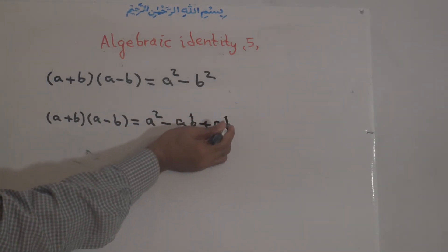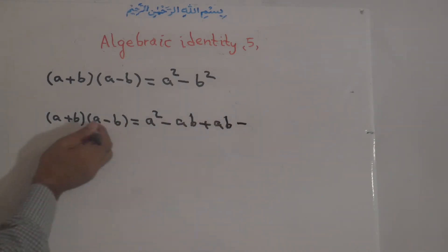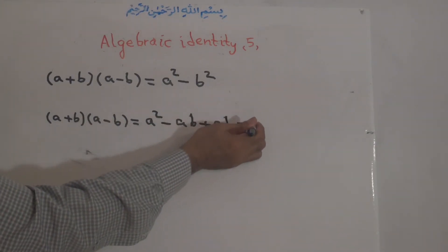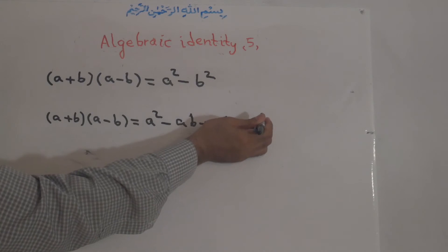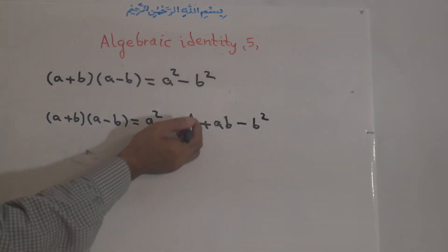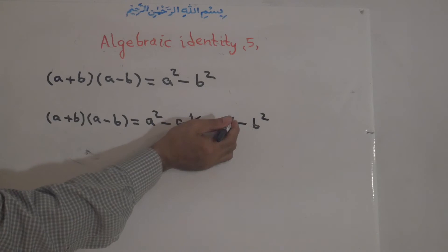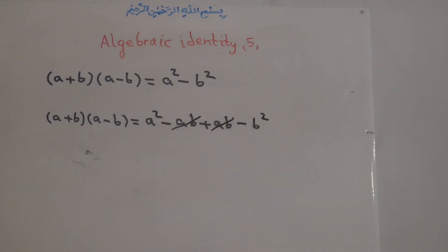Positive times negative is negative, B times B is B to the power of 2. Now we cancel the minus AB with the plus AB or negative AB with the positive AB. The thing that is remaining is A to the power of 2 minus B to the power of 2.